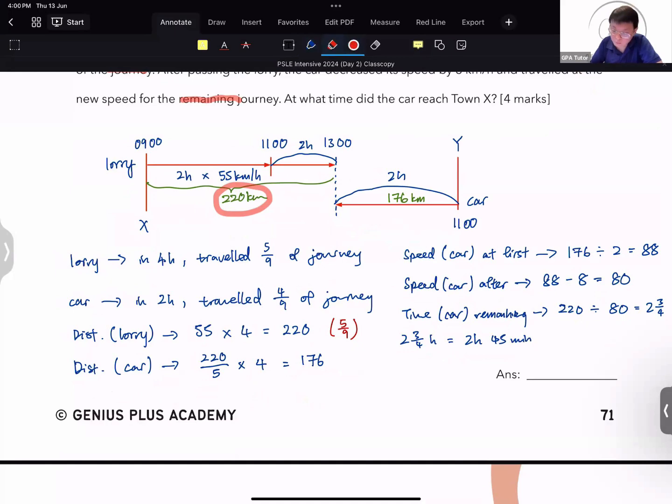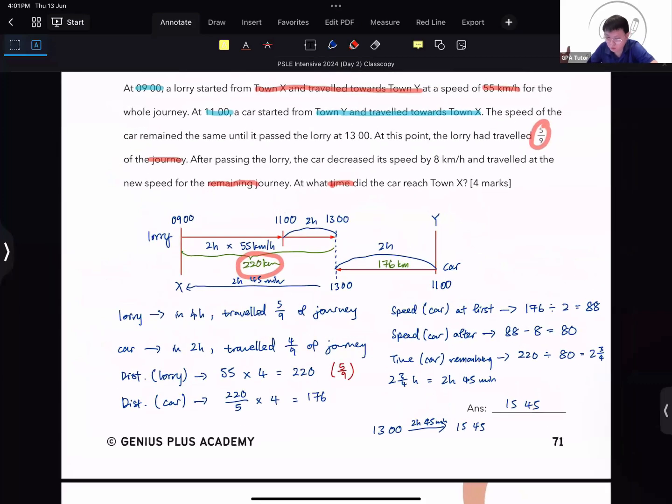And they ask you what time did the car reach. So the car, you can start from this 1300 hours. It will take another 2 hour and 45 minutes. That will give you 15:45. Your 1300 after 2 hour and 45 minutes gives you 15:45. And that's the answer. So it's a fairly complicated question, but you need to make sure you know how to solve it part by part.